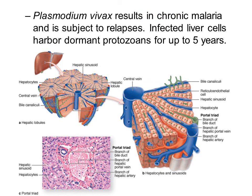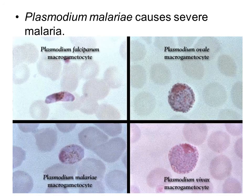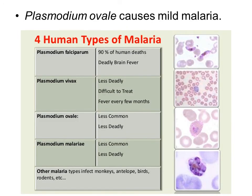Plasmodium vivax results in chronic malaria and is subject to relapses — infected liver cells harbor dormant protozoans for up to five years. Plasmodium malariae causes severe malaria. Plasmodium ovale causes mild malaria.